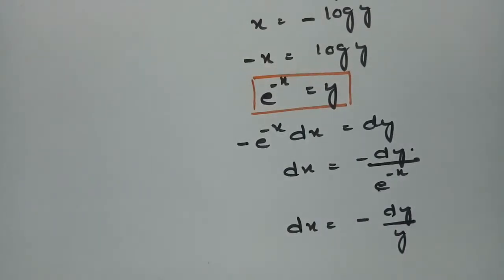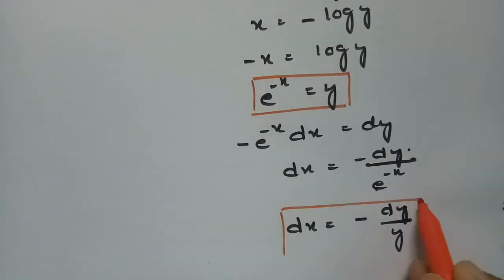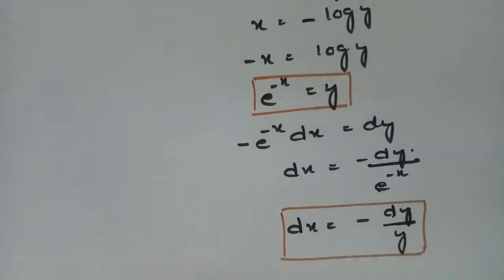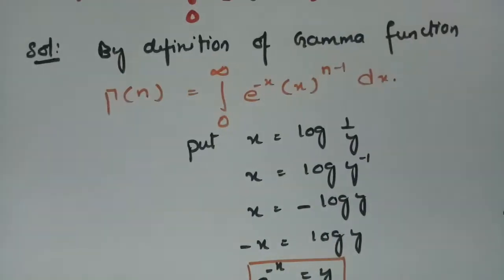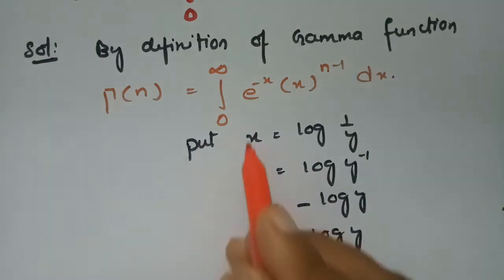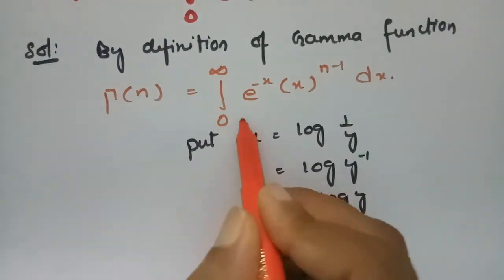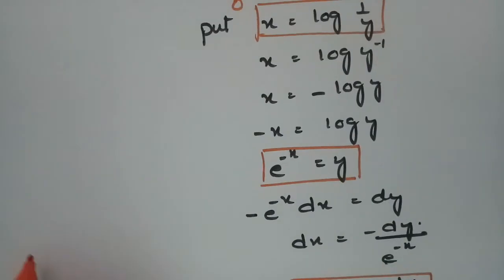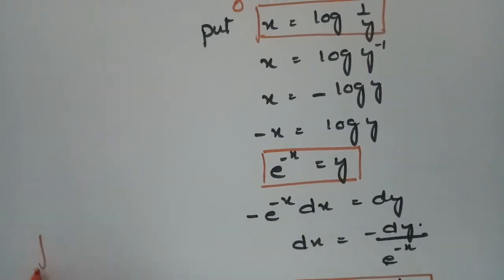So this is the substitution to remember. Now we find the new limits. When x is equal to 0, the new upper limit becomes y equals 1, so this integral goes from 0 to 1.